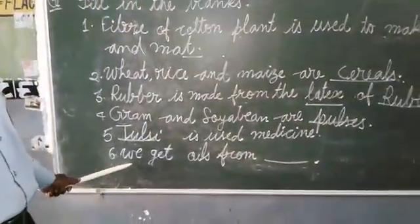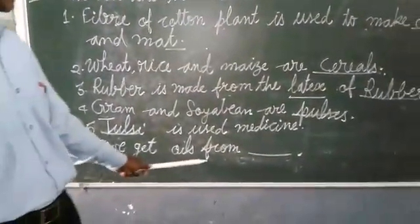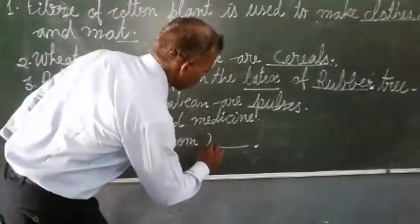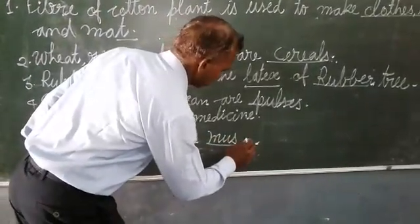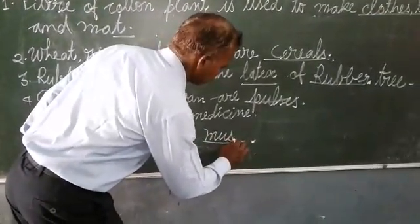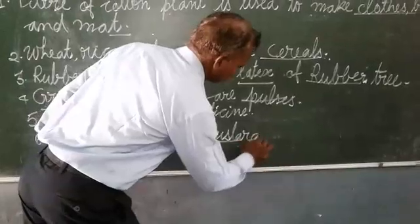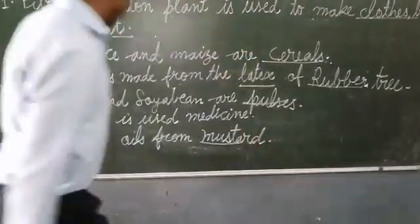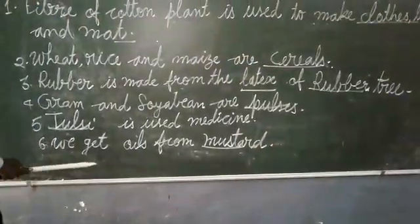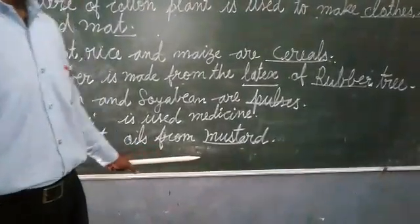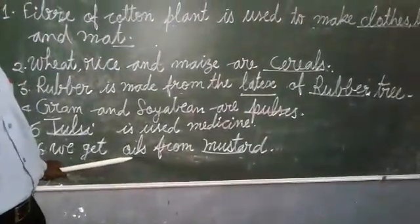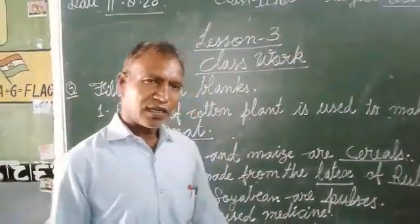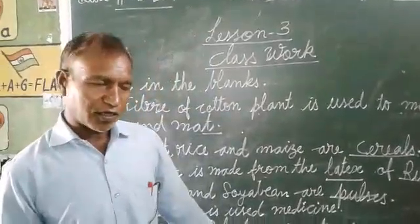We get oils from mustard — tel, the vegetable oil — tel, sunflower, and coconut.